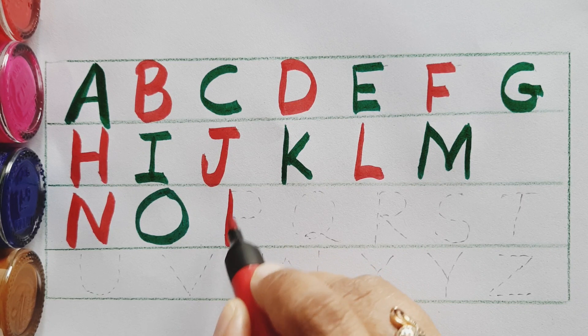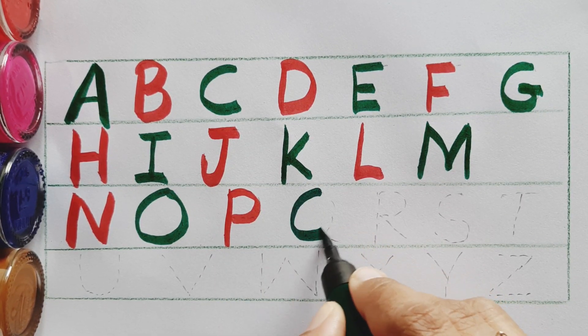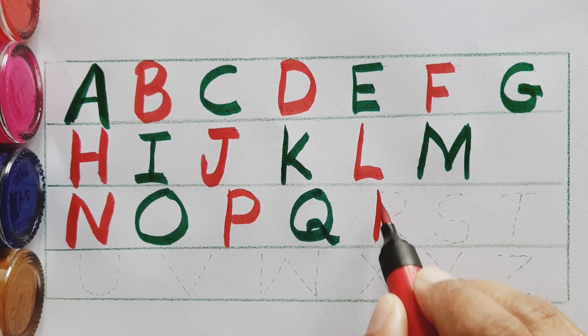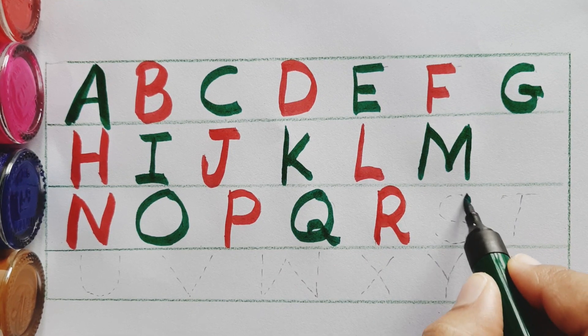P for parrot, Q for queen, R for rambo, S for sunflower.